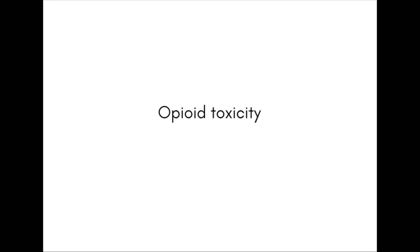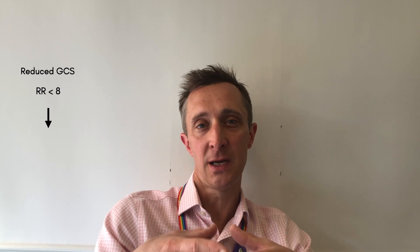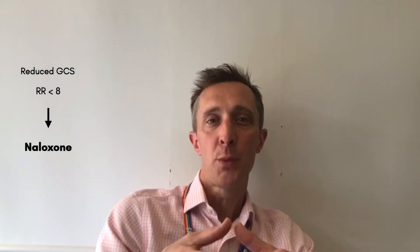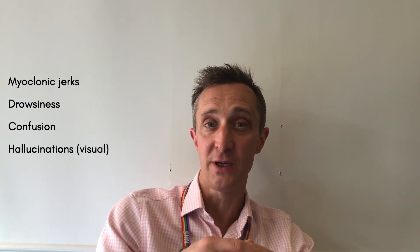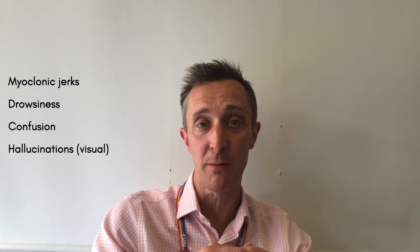I want to talk about opioid toxicity. Clearly, if a patient is unconscious with a reduced GCS and a respiratory rate of less than 8, that is an emergency situation and they need naloxone. Most patients will start to develop more subtle signs of opioid toxicity that we should be picking up on before patients become unconscious or develop respiratory depression. The subtle early signs include myoclonic jerks — not a fine tremor, but coarse jerky movements, particularly of the limbs. Patients may become more drowsy, perhaps a bit confused, and may develop hallucinations or vivid dreams. The hallucinations with opioid toxicity will be visual; if patients have other types of hallucinations, it's very unlikely to be due to their opioids.